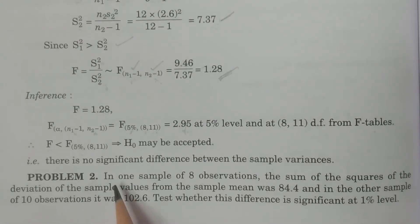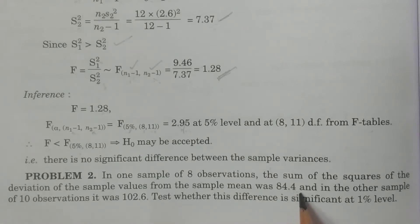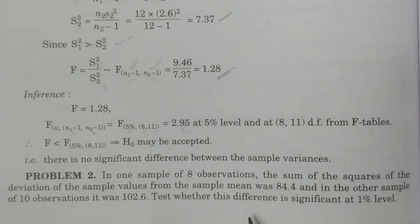In one sample of eight observations, the sum of the squares of the deviations of the sample values from the sample mean was 84.4, and in another sample of 10 observations, it was 102.6. Test whether this difference is significant at 1% level. This is one different question you will get in the examination.